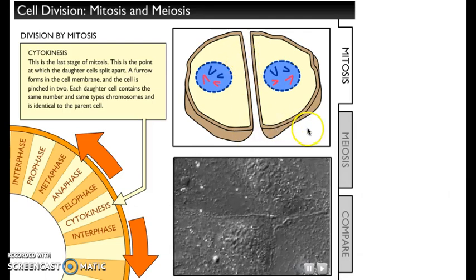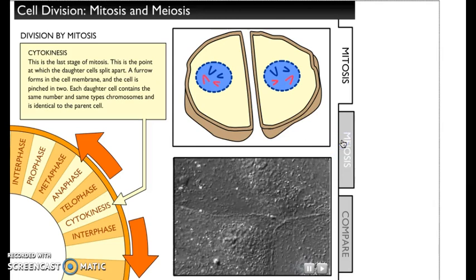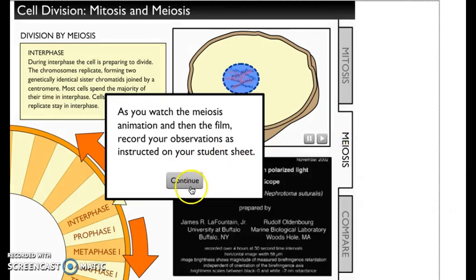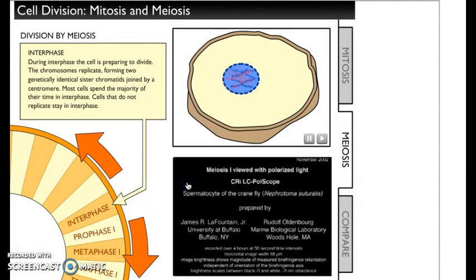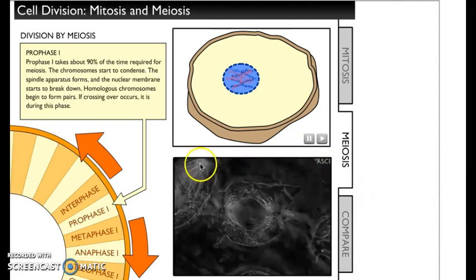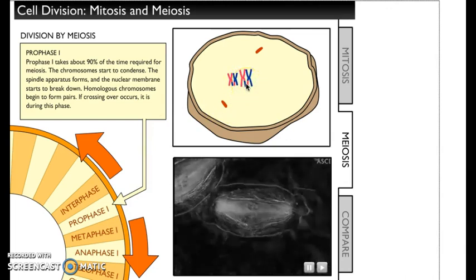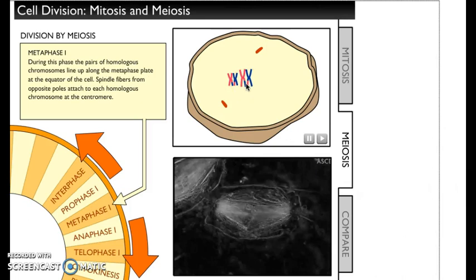Now let's go to meiosis. Remember, meiosis is just for making sex cells — your normal body cells don't go through meiosis. Let's watch these phases and see how many there are. You can see it says prophase one — not just prophase — because meiosis has more phases. It's more complicated, and these chromosomes kind of swapped some genes. That's called crossover, and it helps make genetically unique organisms.